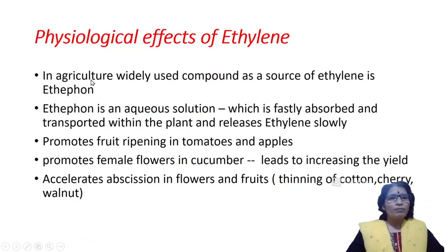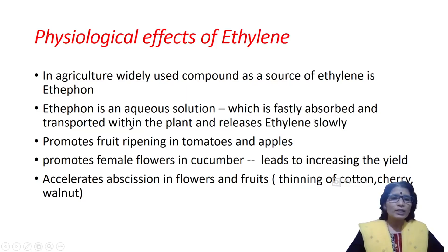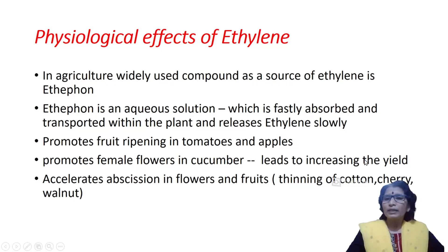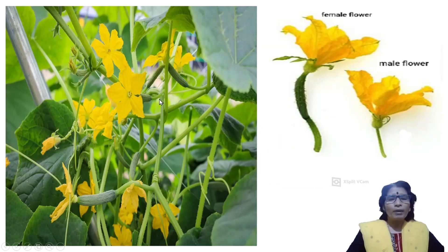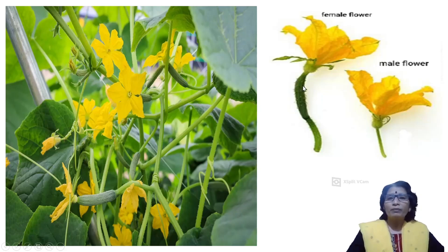Ethylene is available in the market as ethephon, a widely used compound in agriculture. Ethephon is an aqueous solution present in liquid form. When sprayed, it is absorbed and transported within the plant body, releasing ethylene slowly. By spraying ethephon, we can promote fruit ripening in tomatoes and apples. In cucumber, spraying ethephon increases the number of female flowers, leading to increased yield, because only the female flower's ovary develops into fruit.